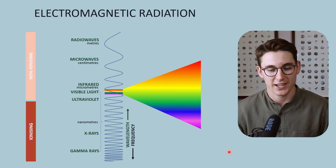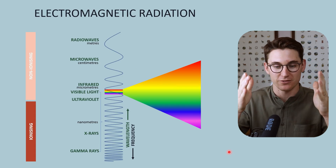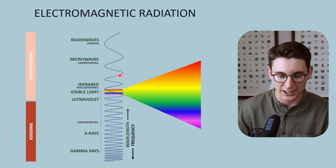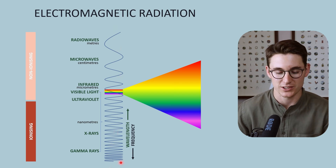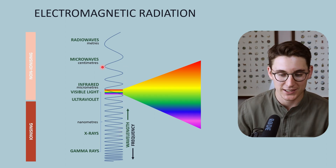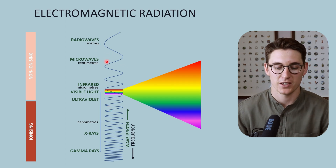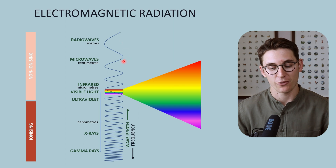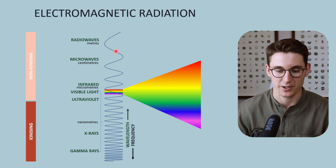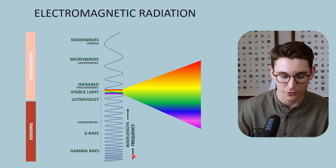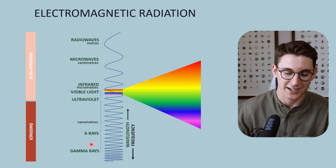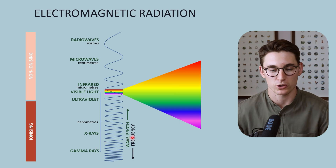The electromagnetic spectrum can be drawn in many different ways, and I like to orientate it vertically like this — I find it much easier to understand. As we head up on this diagram, we see the wavelength — the distance between successive peaks in the wave — increases. Not only does the wavelength increase as we head up, but our frequency, or the number of cycles of waves per second, decreases. As we head lower down, frequency increases and wavelength decreases. We can see they're inversely proportional to one another.